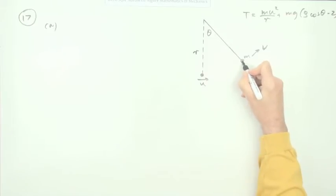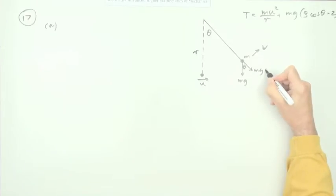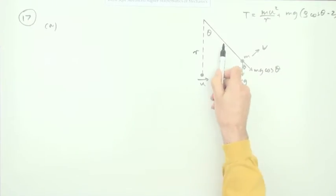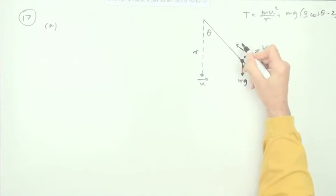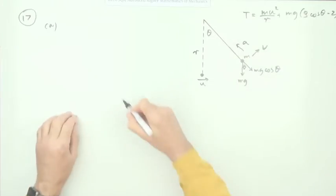The weight of this object is mg. The component along the direction there, because that'll be theta, will be mg cos theta, because it's beside the angle theta. So the tension in the string will have to support that as well as providing the centripetal acceleration. What will the velocity be by the time it gets to here?